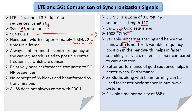The sync signals can also be positioned in a variety of ways, not necessarily in the center at 1 MHz. This is primarily to help with faster sync due to the sync raster concept. So the fixed bandwidth and fixed position relative to the center frequency that we had in LTE are quite different in 5G NR.